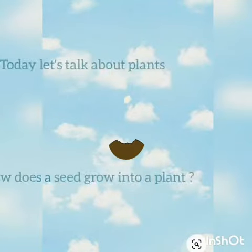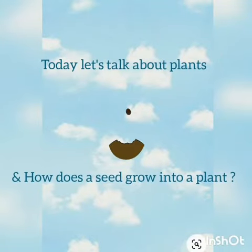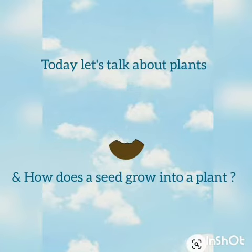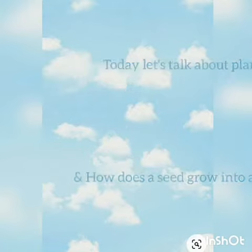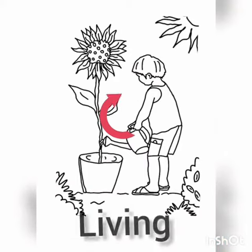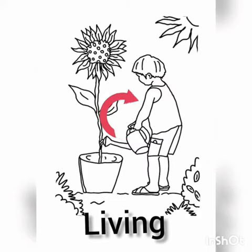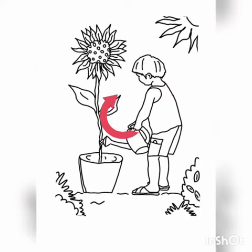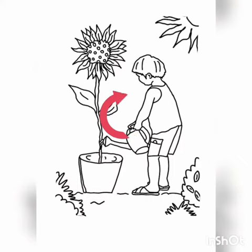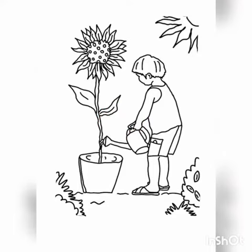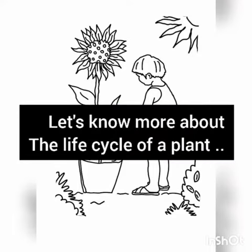Hello kids! Today let's talk about plants and how does a seed grow into a plant. Plants are living things and all living things have a life cycle. Life cycle means the stages a living thing goes through during its life. Let's know more about the life cycle of a plant.